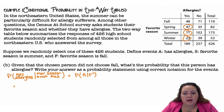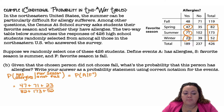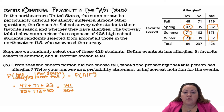Looking for allergies and not fall — so spring, summer, and winter that have allergies — divided by the total for seasons that are not fall. That gives us 47 plus 71 plus 23 over 82 plus 173 plus 52, which is 141 over 307, giving us 0.459.